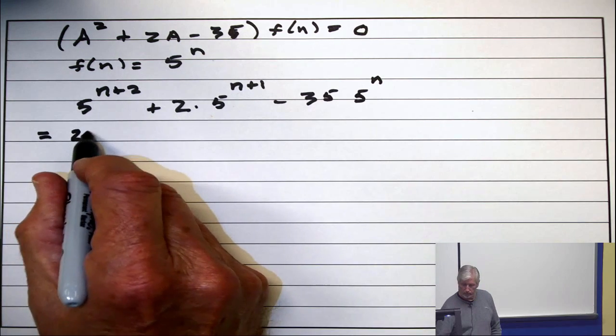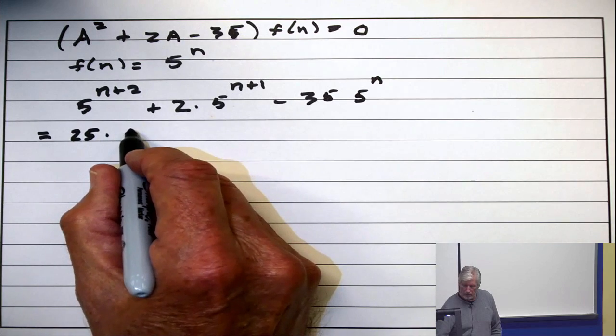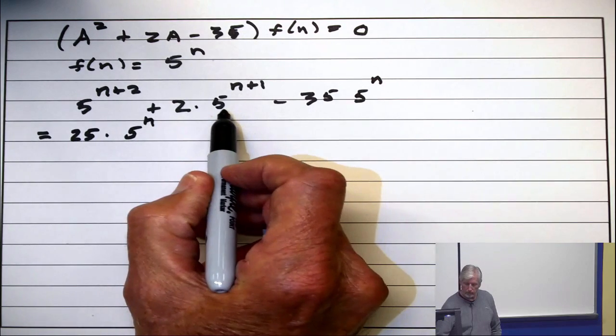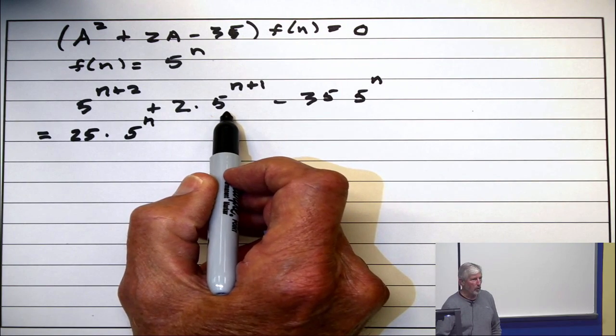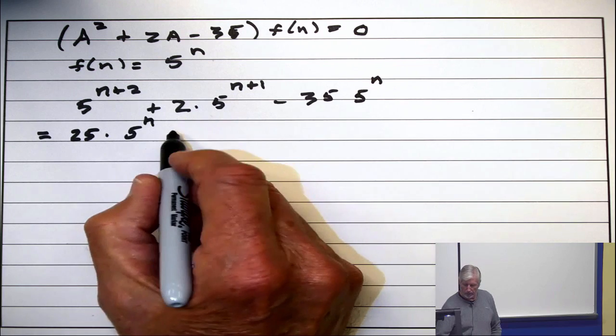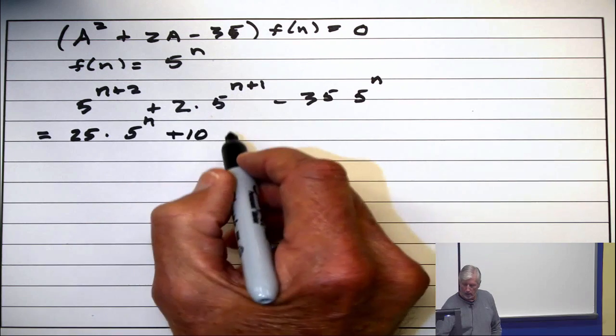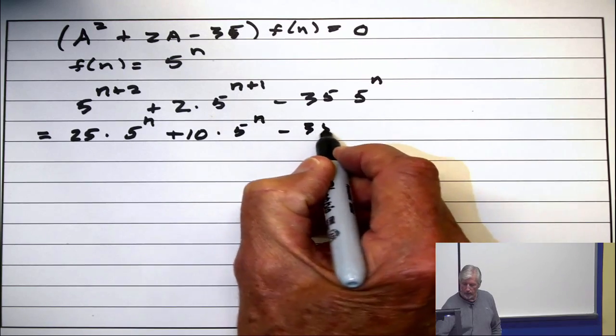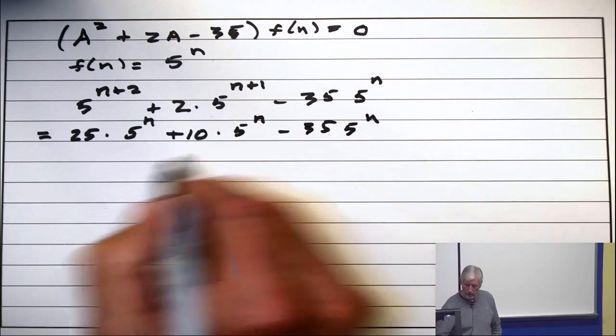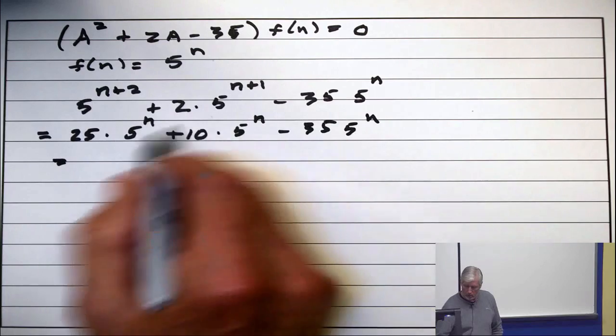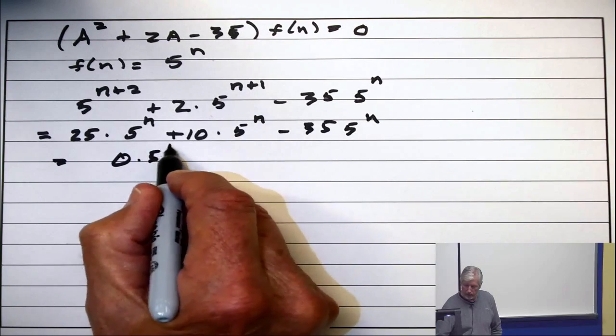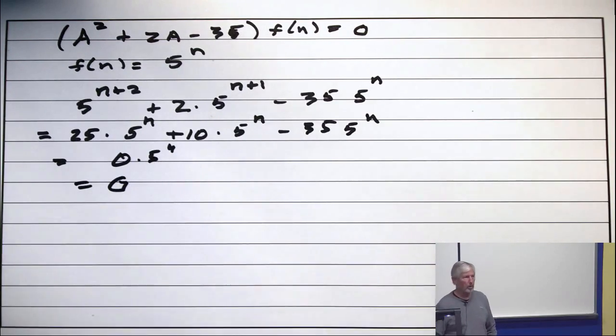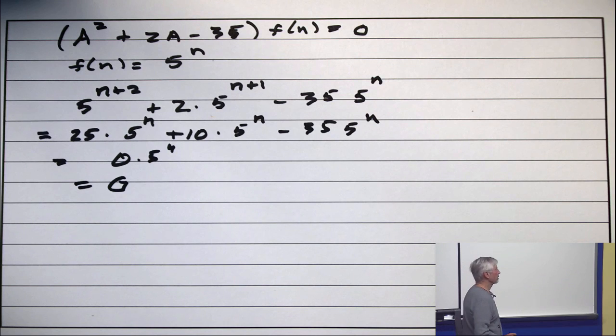So, this first term is 25 times 5 to the N. 5 to the N plus 1 is 5 times 5 to the N. So, this is plus 10 times 5 to the N. And this is minus 35 times 5 to the N. So, this is 0 times 5 to the N, which is 0. So, 5 to the N is a solution.